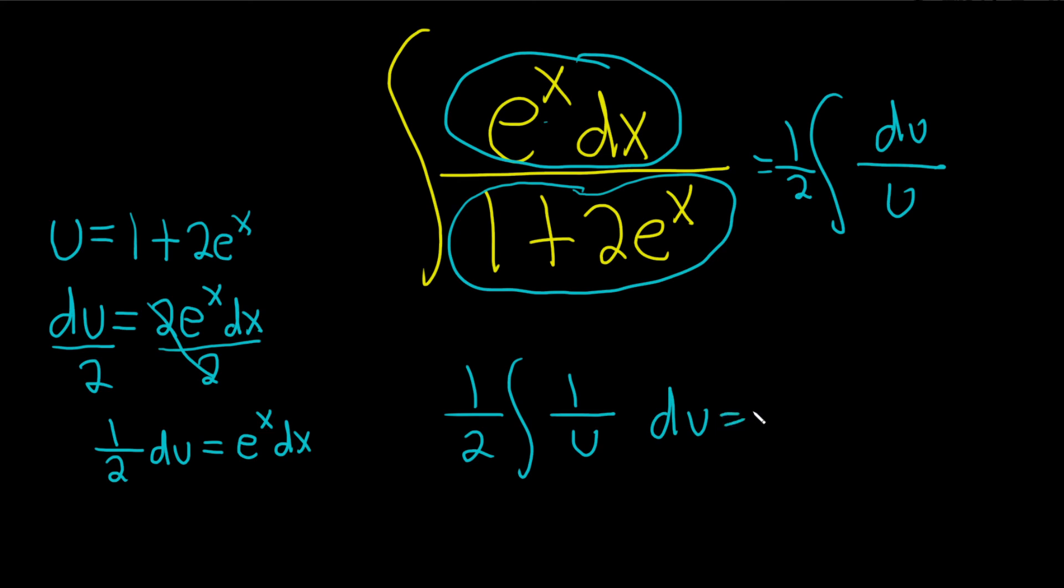This is equal to 1 half times the natural log of the absolute value of u plus c. This is equal to 1 half natural log absolute value of u, which we said was 1 plus 2 e to the x, and then we still have our constant of integration, capital C.